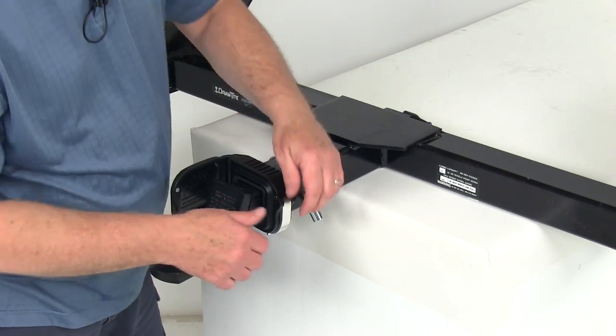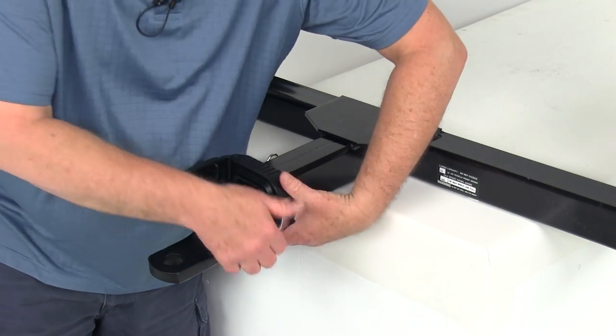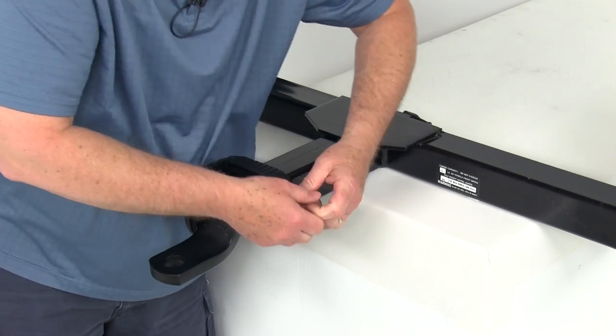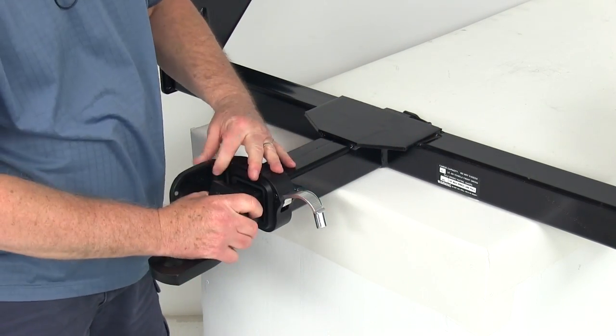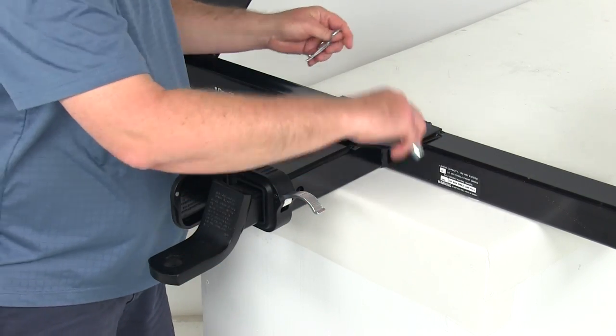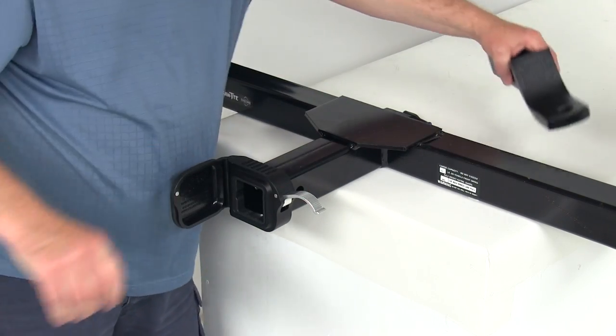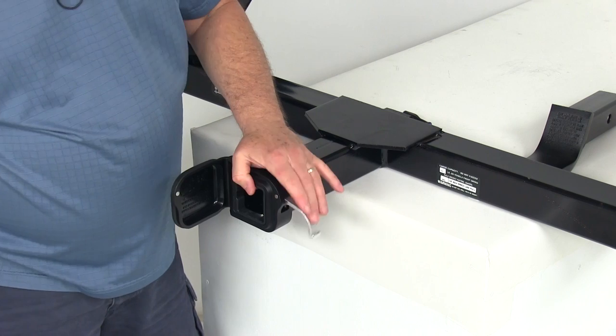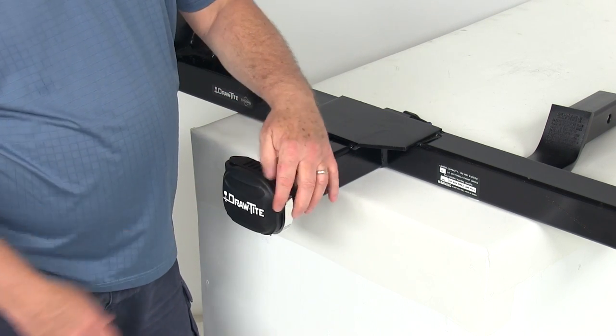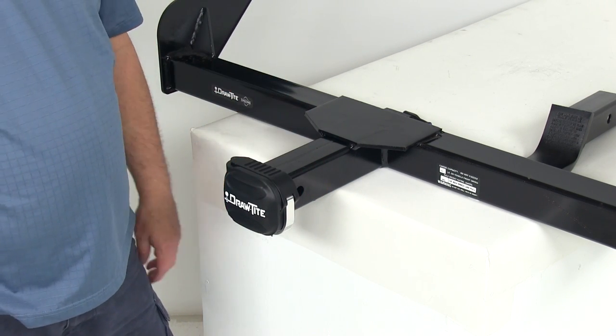And then to remove it, all you'll need to do is just go ahead and pull back up on this lever. That'll release it. Take your pin and clip out. Slide your ball mount back out. And then if you're not going to be using it, just go ahead and put your clip down, close your door. It'll stay with the magnet closed and you're all ready to go.